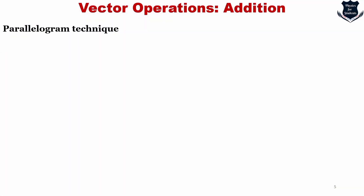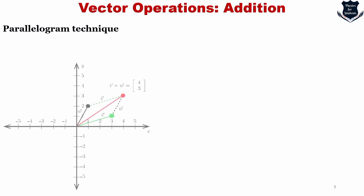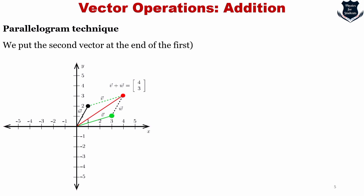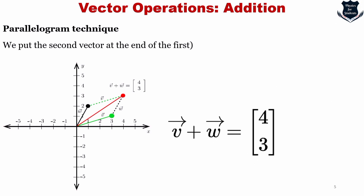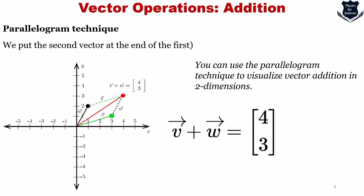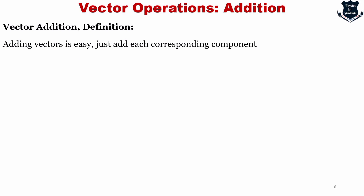We can also employ the parallelogram technique. Adding two vectors can be done geometrically by placing the second vector at the end of the first. This is the parallelogram technique illustrated on the figure. We get v + w = (4, 3). This technique visualizes vector addition in two dimensions, and provides a rigorous definition that holds for vectors of any dimension, including complex vectors.